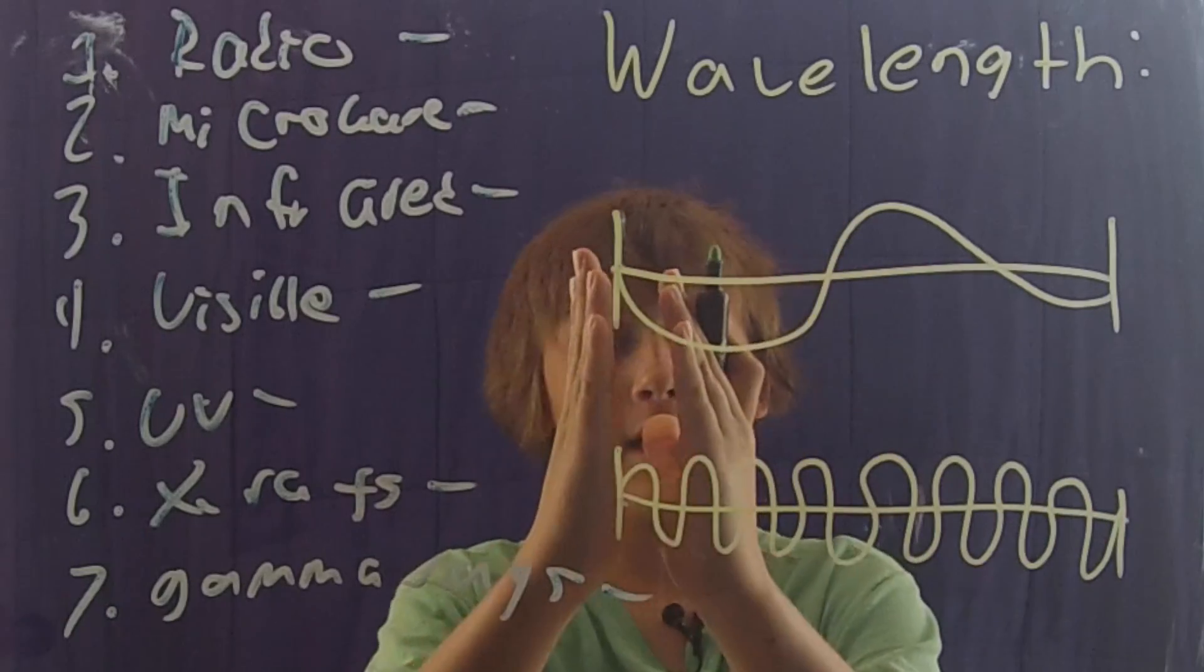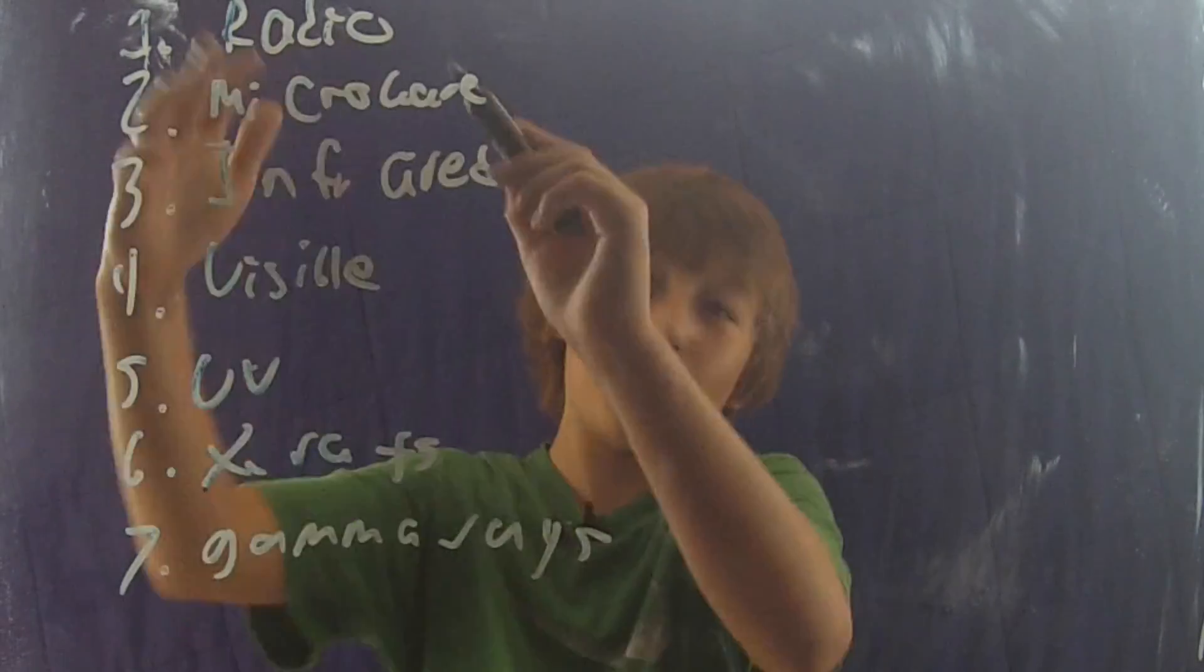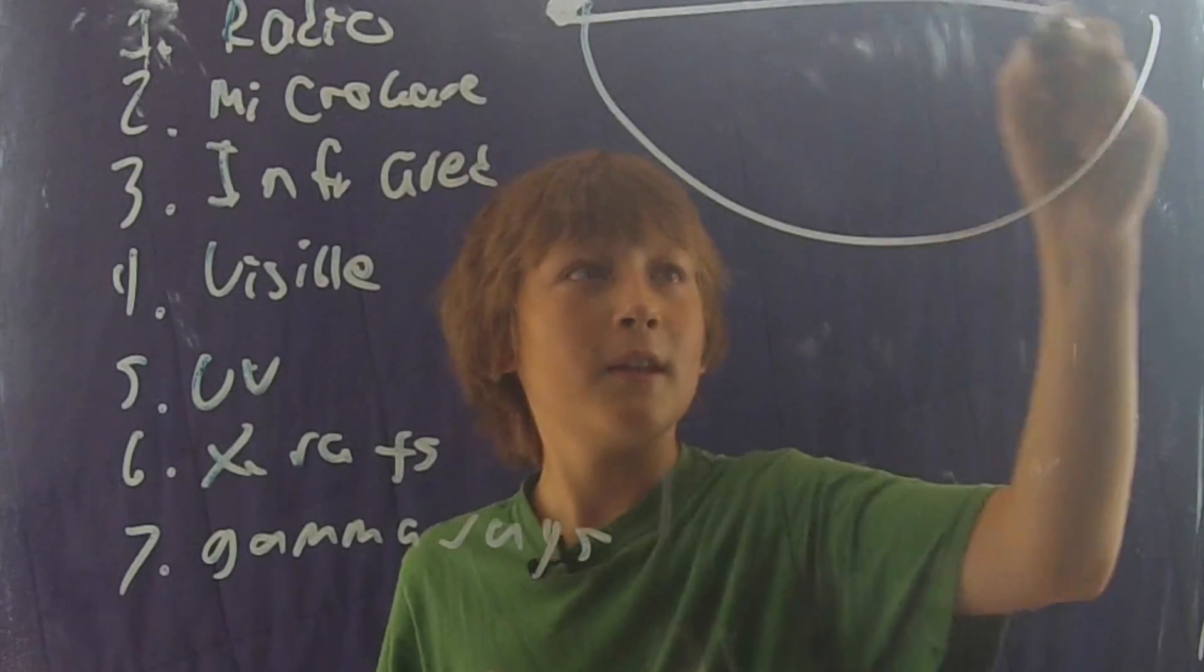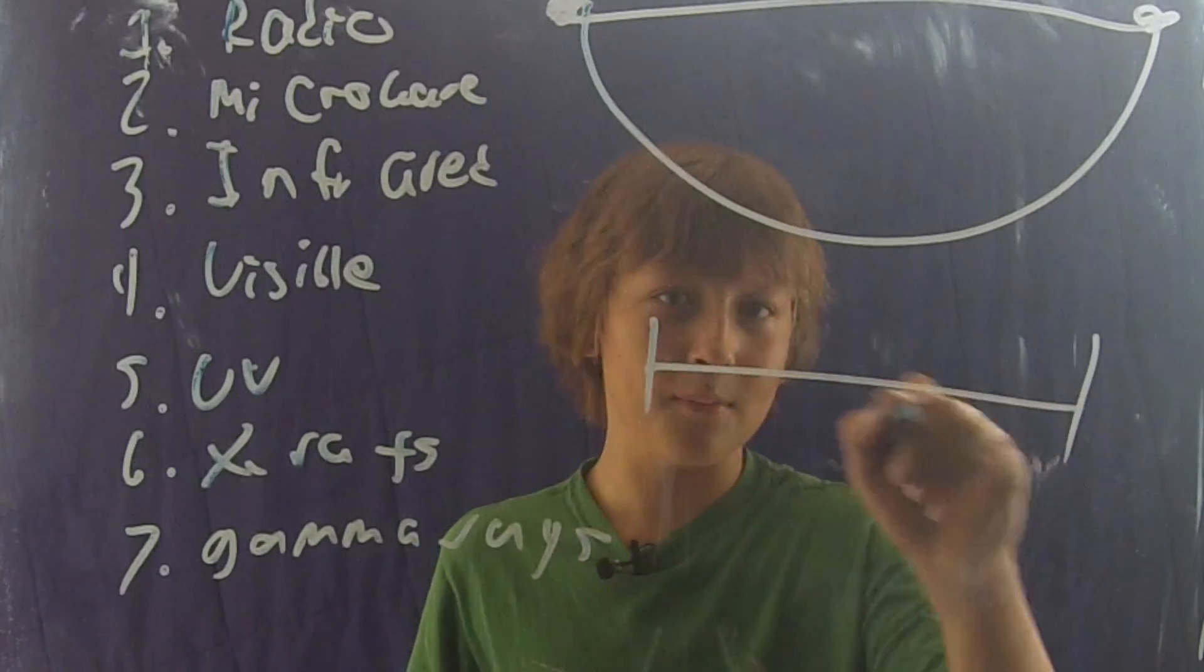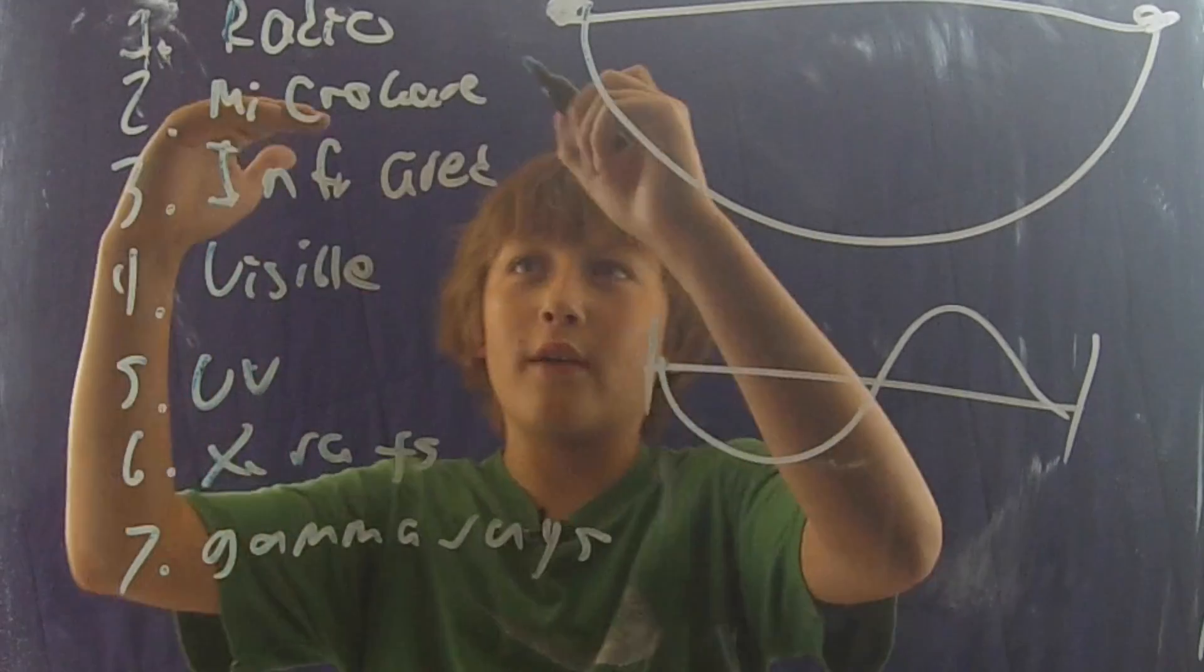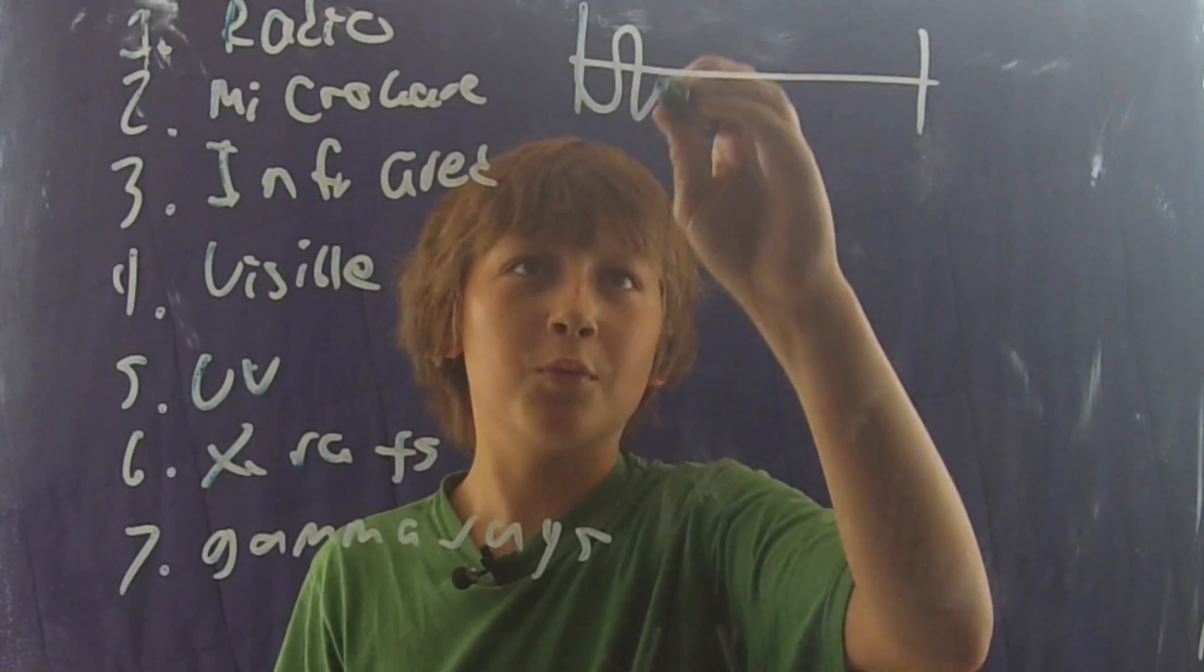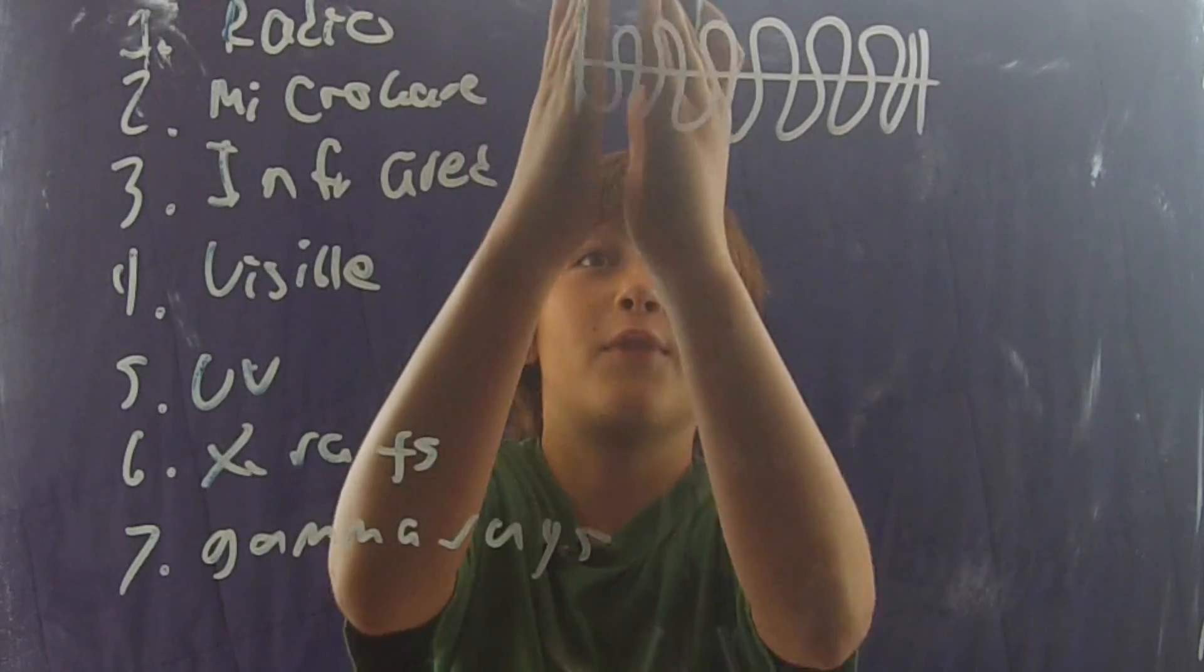Also the higher the frequency the lower the wavelength. The way that I like to think of it is radio waves: the longest and the lowest. This means they will have the longest wavelength and the lowest frequency. We can go all the way from radio waves where the wavelength is super long and it doesn't happen very often all the way down to gamma rays which happen very quickly and their wavelengths are very very short.